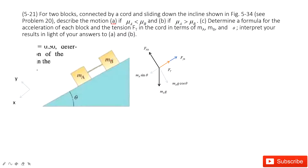Now look at object B. We have gravity, normal force, friction, and tension. We project gravity into the x-component and y-component as well. If we consider mu_A smaller than mu_B, that means the friction for A is smaller than the friction for B.